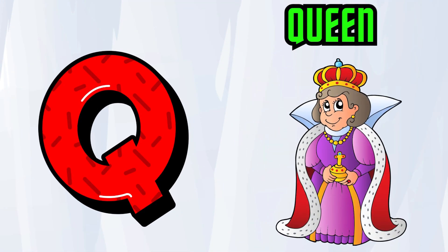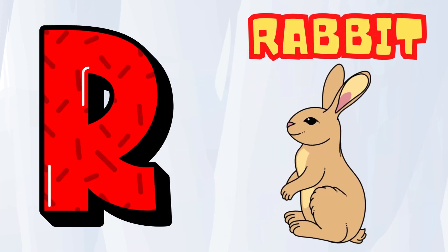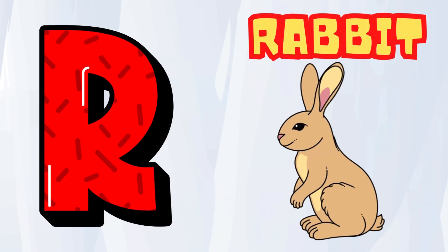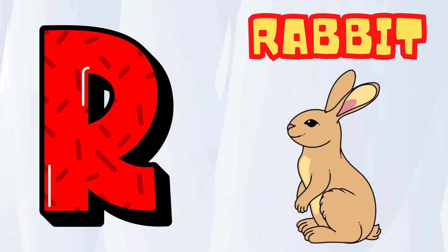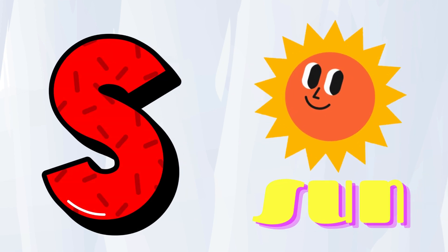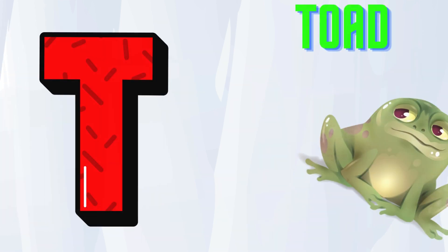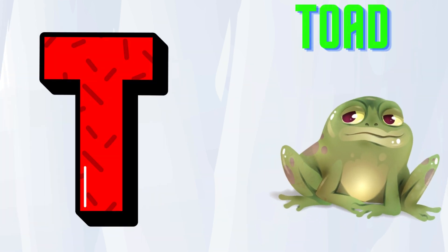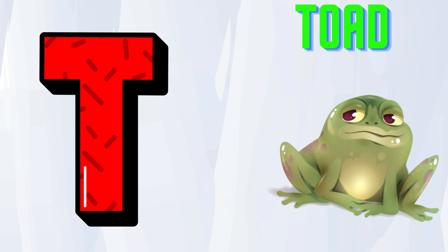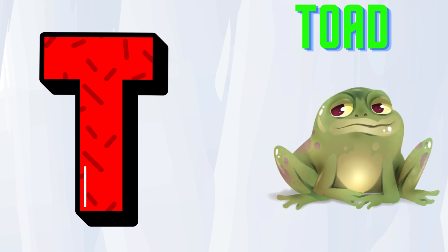Q is for Queen, Q-Q-Queen. R is for Rabbit, R-R-R-Rabbit. S is for Sun, S-S-Sun. T is for Toad, T-T-Toad.